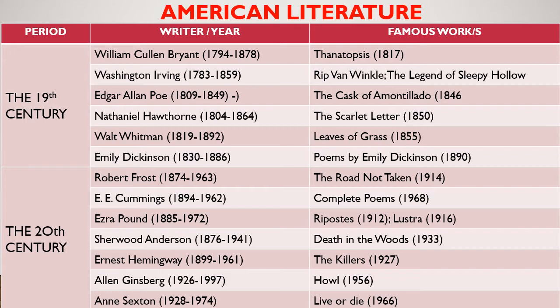Allen Ginsberg was known for his work with incantatory rhythms and raw emotions. As a student at Columbia University in the 1940s, he began friendships with William S. Burroughs and Jack Kerouac, forming the core of the Beat Generation, which aimed to bring poetry back to the streets. Last but not least in American literature is Anne Sexton, an American poet known for her highly personal confessional verse. She won the Pulitzer Prize for Poetry in 1967 for her book Live or Die.